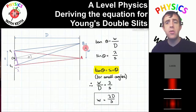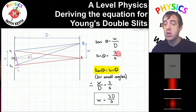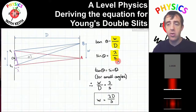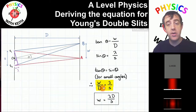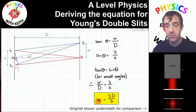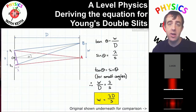As long as the fringe spacing is sufficiently small and the distance between the screens is sufficiently large, this is a perfectly good approximation. Since tan theta equals w over d and sine theta equals lambda over s, and tan theta equals sine theta, we get w over d equals lambda over s. Rearranging gives the fringe spacing w as the subject of the equation. All four quantities are distances, so make sure you use consistent units.